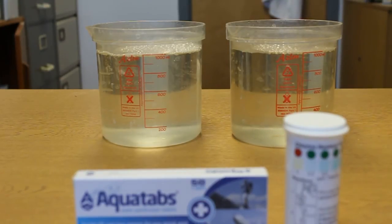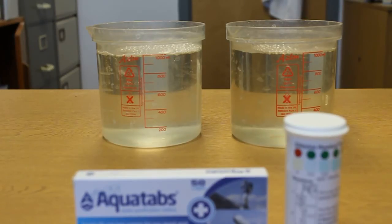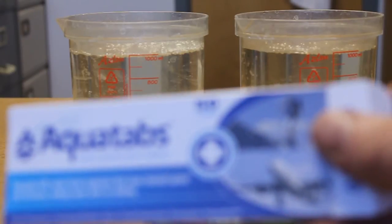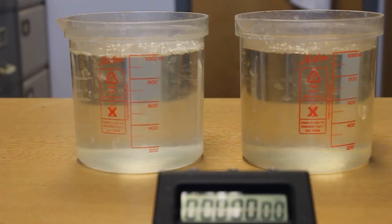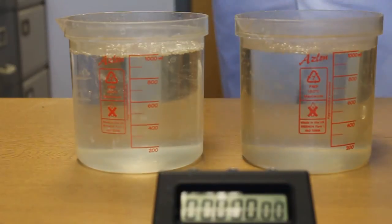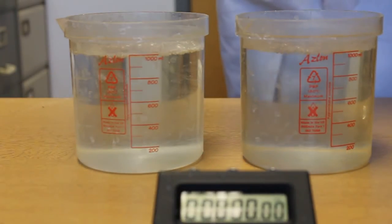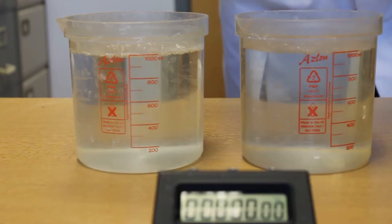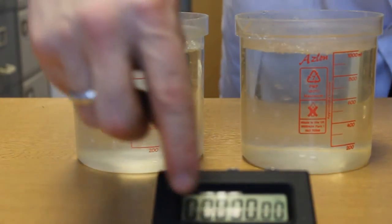Having filled the samples you can now add the Aquatabs water treatment tablets. Next we will add the Aquatabs tablets to the samples and start the reaction. Tablets are in strips and can be torn off. In this case we will put one tablet in here, which is sample 1, and we will put two tablets in here, sample 2, and start the timer.